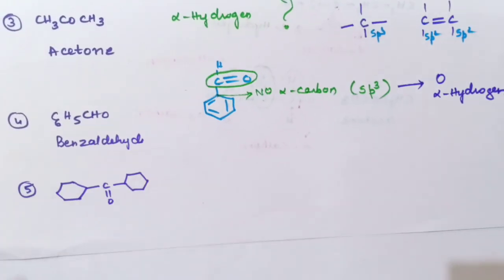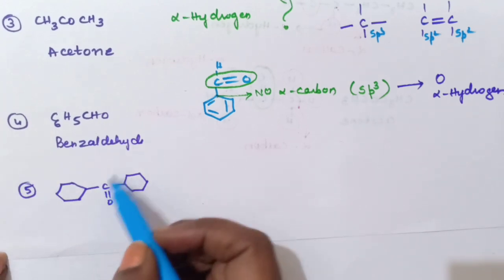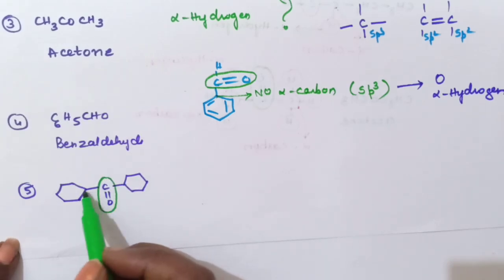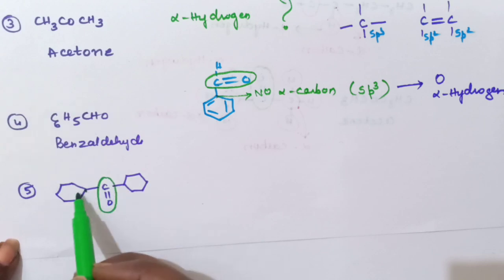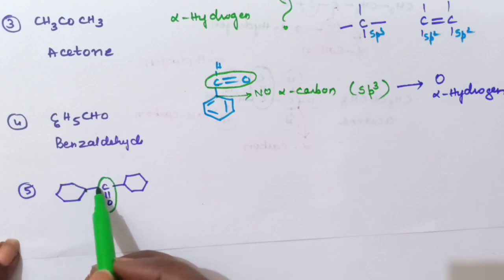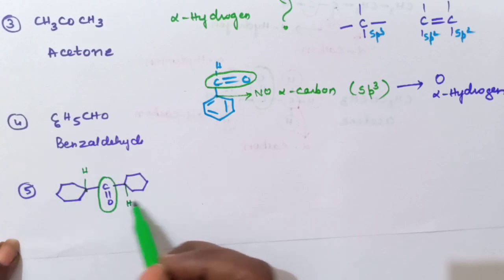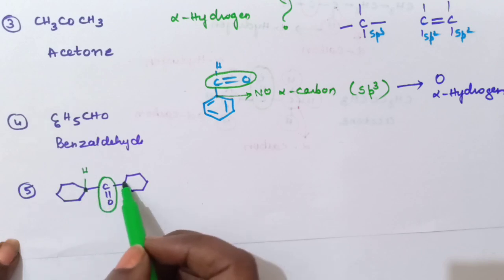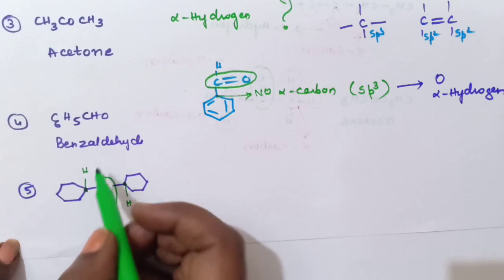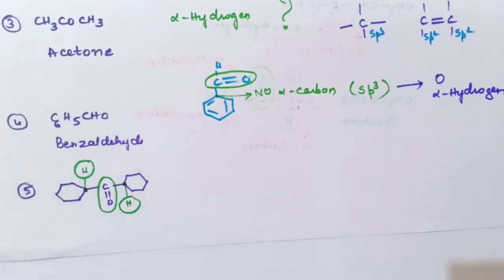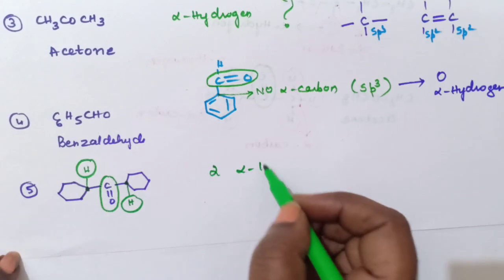Next, let us solve for this molecule — find the number of alpha hydrogen atoms. This is the carbonyl carbon. The next carbons attached to it are the alpha carbons. Check whether any double bond is present — there is no double bond, only single bonds. So both adjacent carbons are alpha carbons, each having one hydrogen. Therefore one alpha hydrogen is on this alpha carbon and one on the other, giving two alpha hydrogen atoms in total.